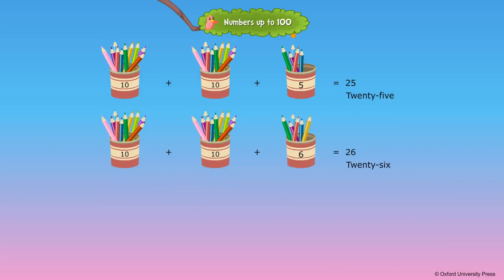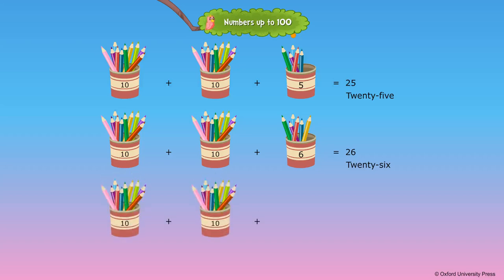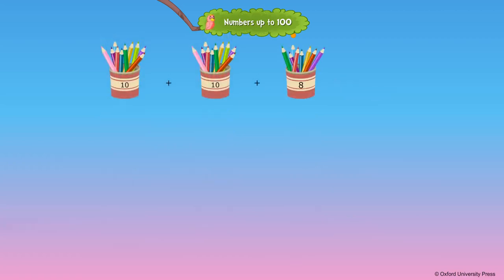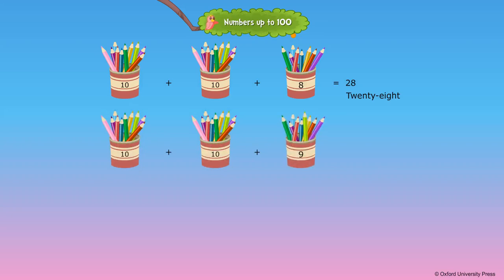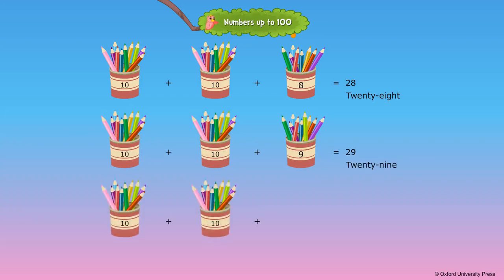20 plus 6 is equal to 26. 20 plus 7 is equal to 27. 20 plus 8 is equal to 28. 20 plus 9 is equal to 29. 20 plus 10 is equal to 30.